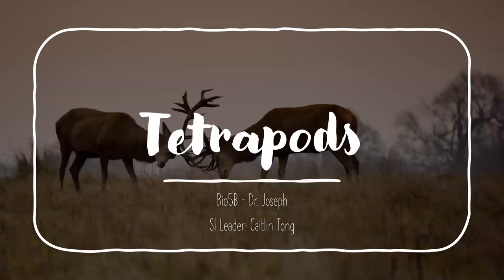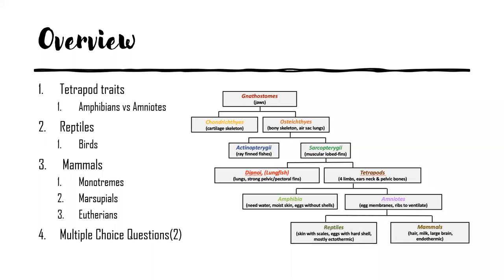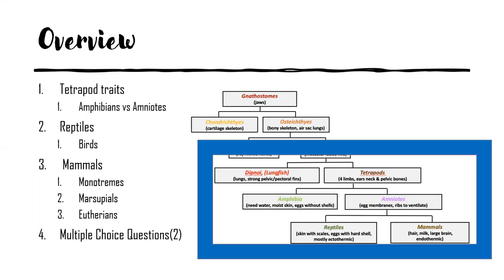Hi guys, my name is Caitlin. I am one of your SI leaders for Bio 5b with Dr. Joseph. For today's video, I want to talk to you guys about tetrapods, which is a topic covered in lecture 8. We're going to go over tetrapods and their unique traits, amphibians versus amniotes, reptiles versus mammals, and the different clades within each. These are the clades I'll be covering on the Tree of Life.